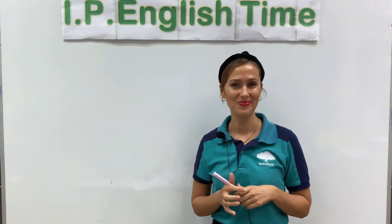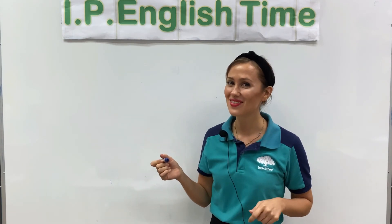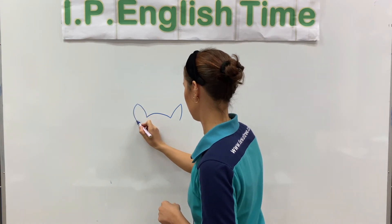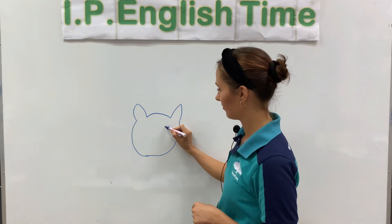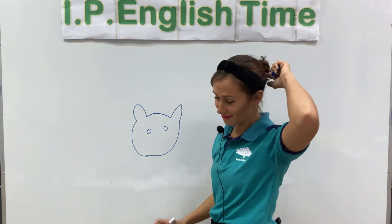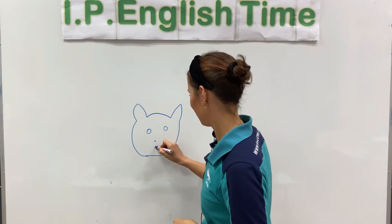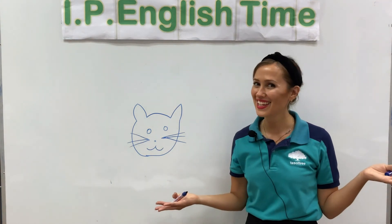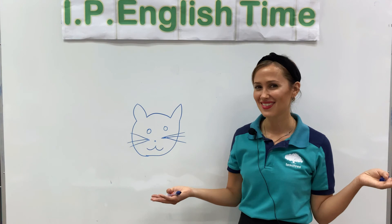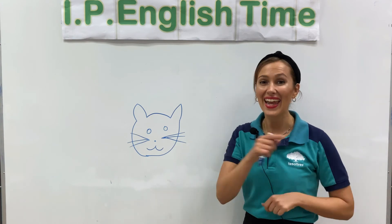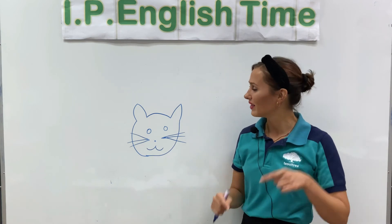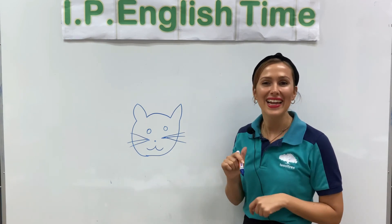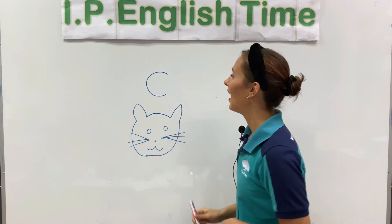Okay, are you ready for our next picture? Let's draw. Can you guess what it is? Hmm, what is it? It's a cat. Now let's think — what is the first letter? Yes, letter C. C is for cat.